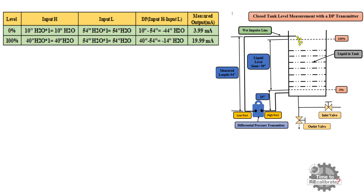Now let's understand the calculation at 100% level. At 100% level, the DP transmitter high side has 40 inches H2O pressure, multiplied by the specific gravity of water. Here, 40 inches is the total distance from the transmitter to the 100% line. So the DP transmitter high input side has 40 inches H2O pressure at 100% level. Similarly, at 100% level, the transmitter low side has 54 inches H2O pressure, multiplied by the specific gravity of water which is 1. So the DP transmitter low side has 54 inches H2O pressure at 100% level. Differential pressure is 40 minus 54, equal to minus 14. At 100% level, differential pressure is minus 14 inches H2O.